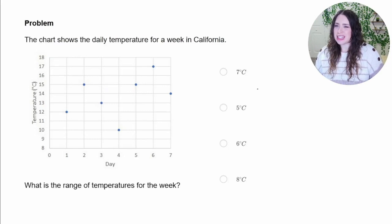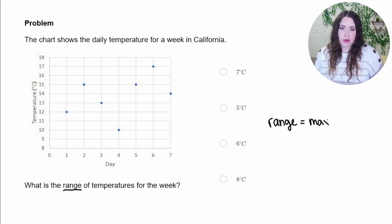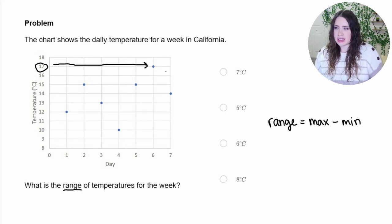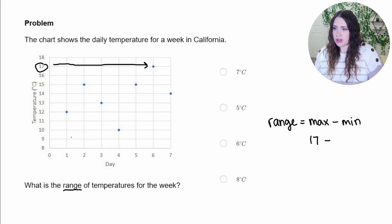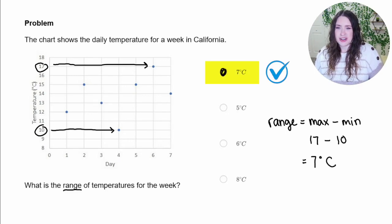This question says: the chart shows the daily temperature for a week in California. The temperature is displayed on the y-axis and the days are on the x-axis. It asks us: what is the range of temperatures for the week? The range can be found by taking the maximum (highest) temperature and subtracting the minimum (lowest) temperature. The highest temperature reached during the week is 17 on day 6 — that's our maximum. The lowest temperature is 10. So we do 17 minus 10 to get a range of 7 degrees Celsius, which is our correct answer.